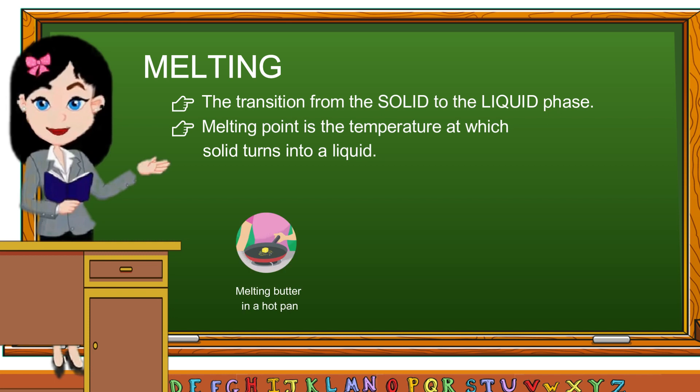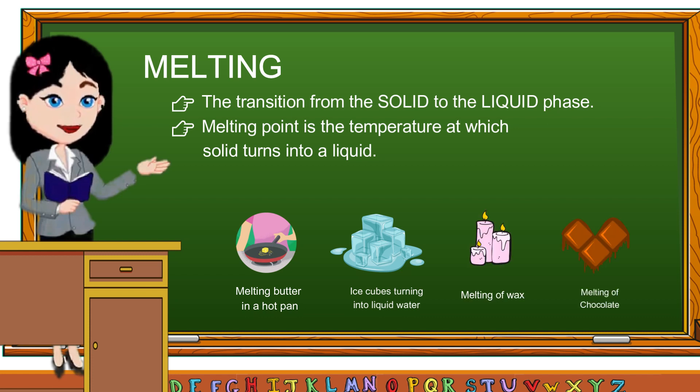Some examples of melting are: melting butter in a hot pan, ice cube turning into liquid water, melting of wax, melting of chocolates, etc.